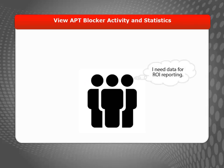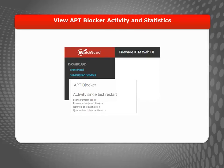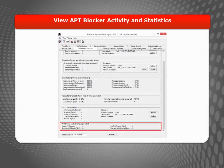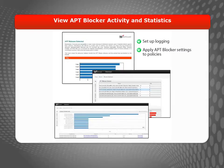Now that APT Blocker is scanning traffic for malware threats, it's good to make sure you know what APT Blocker is doing and how it protects your network. To see statistics on current APT Blocker activity in the Web UI, you can select Dashboard, Subscription Services. You can also look at the Subscription Services tab in Firebox System Manager for current Firebox statistics about APT Blocker activity since the last system restart. Or you can use the reports from WatchGuard Dimension to monitor APT Blocker activity. These reports are automatically generated from the log message data from your Firebox devices. All you have to do is make sure that you've correctly set up logging and you've applied the APT Blocker settings to your policies.